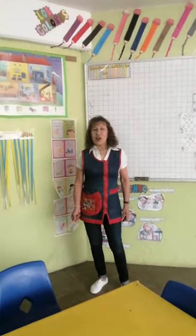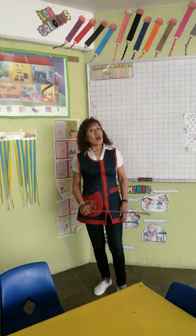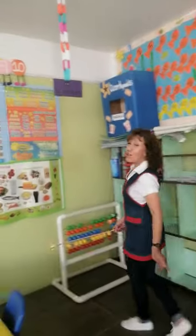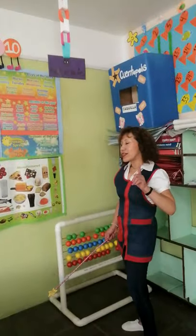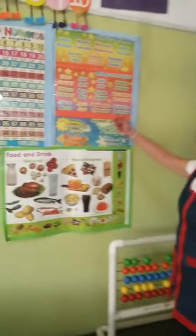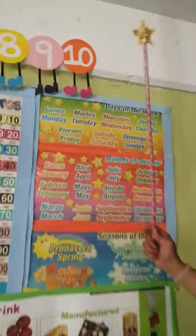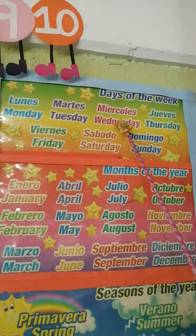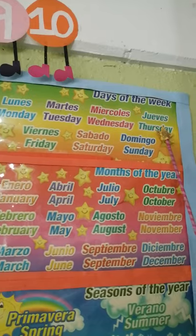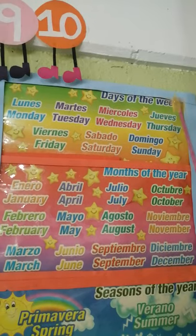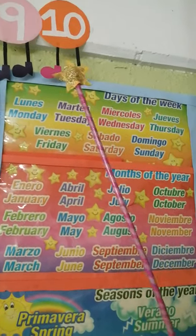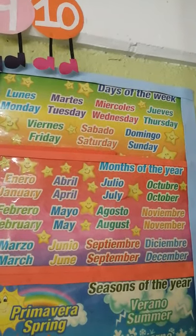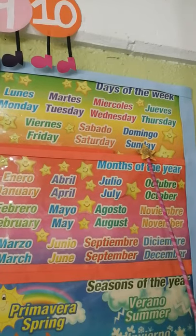Let's start with the date, as always. Let's start with the days of the week. Everybody repeat at home. Monday, Tuesday, Wednesday, Thursday, Friday, Saturday, and Sunday.